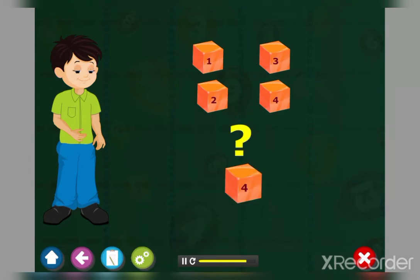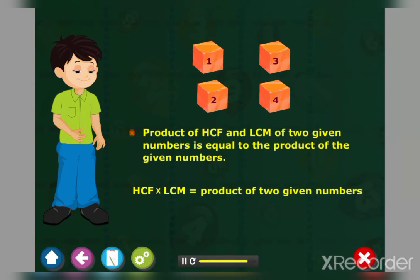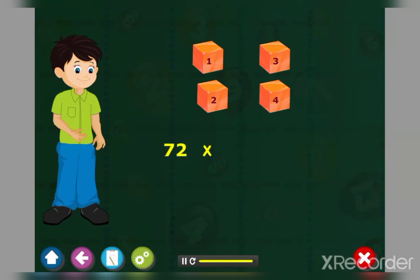Yes, he can, because Raju knows that LCM and HCF are related to each other. Product of HCF and LCM of two given numbers is equal to the product of the given numbers. Hence, Raju multiplies the two numbers 72 and 168 and divides the product by 24 to get the LCM as 504. Take care.